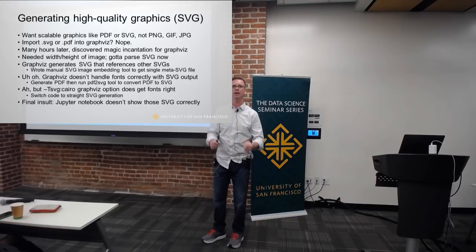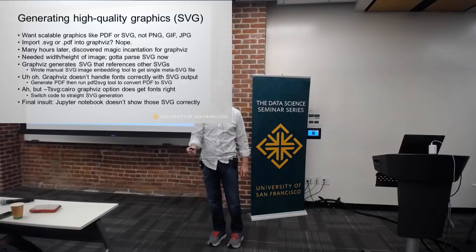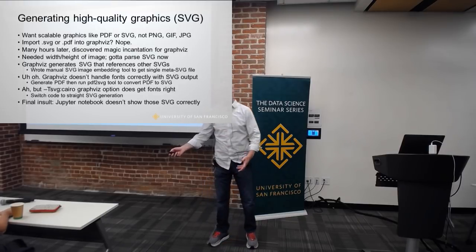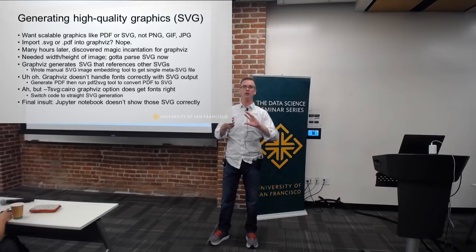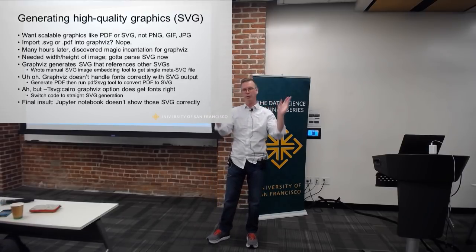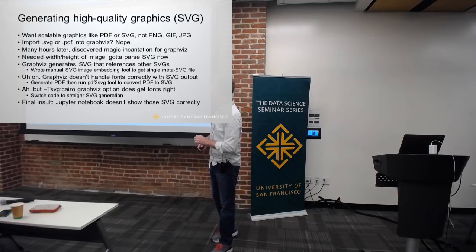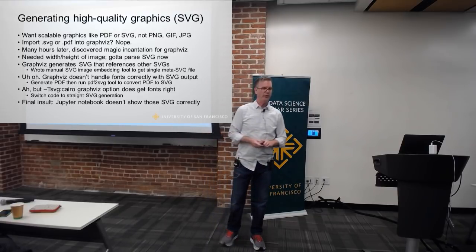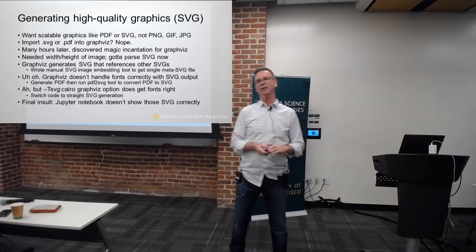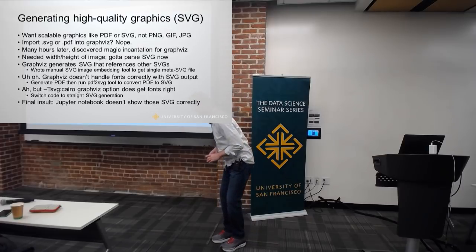That's completely unsatisfactory. So I'll write my own code to merge all of these SVG files appropriately and massage all their naughty bits. Great, I've got that. But then the new thing I'm using to generate SVG out of Matplotlib screws up the fonts.